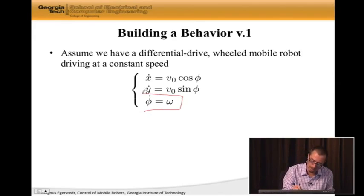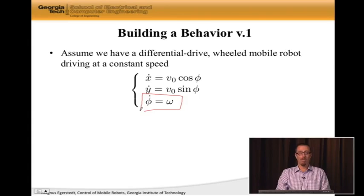So this is the equation that's governing how the input ω hits the state that we're interested in—in this case φ, which is the heading of the robot. So φ̇ = ω.